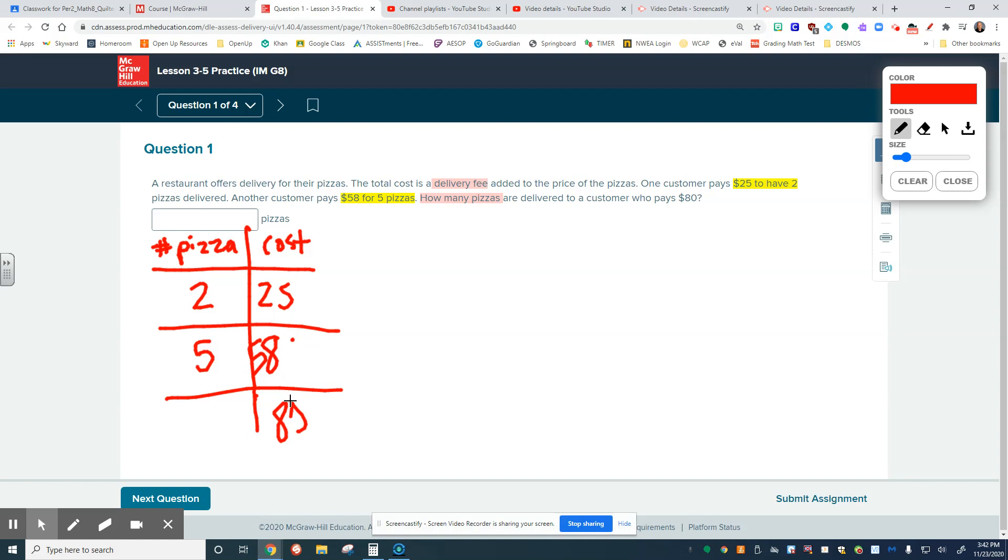In order to find our value, we need to go from the beginning like we did before and we find the slope. So we're going to find from here to change in Y or the change in X. $58 minus 25 divided by 5 minus 2. 33 and 3, which means that our cost per pizza is $11 per pizza.